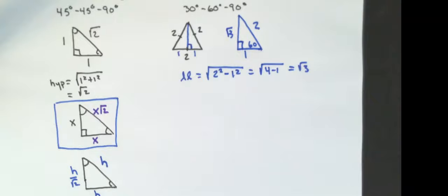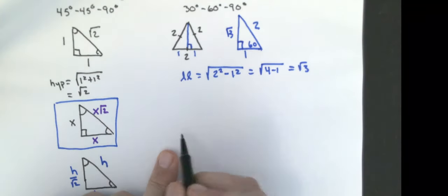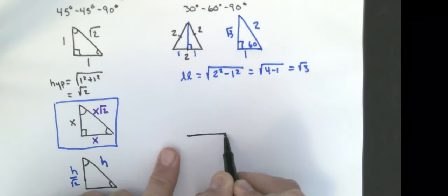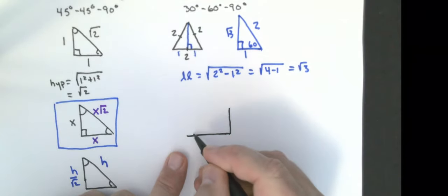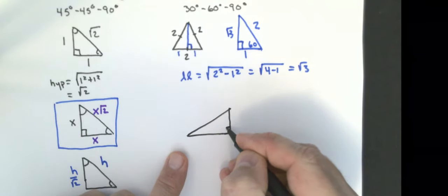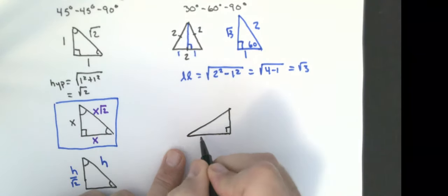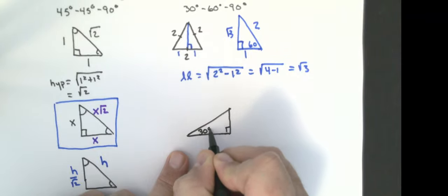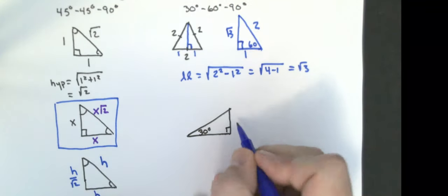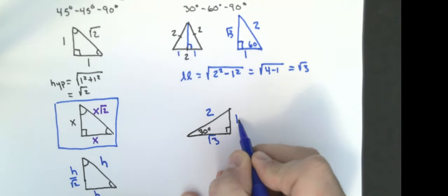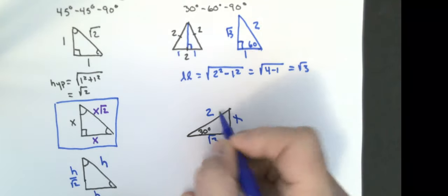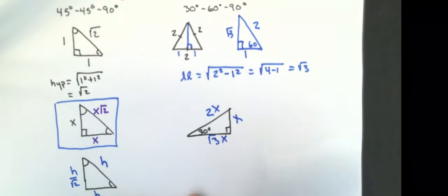So the triangle, drawn in a different orientation with the 30-degree angle labeled, has sides one, two, and square root of three. Generalized, the sides are x, 2x, and x root three.